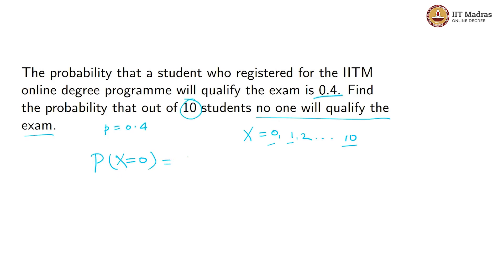We have n equals 10. So P(X = 0) equals 10 C 0 times probability of success 0.4 to the power 0, times probability of failure 0.6 to the power 10.